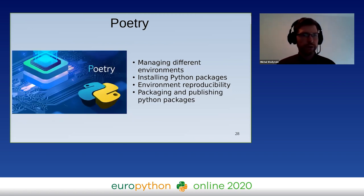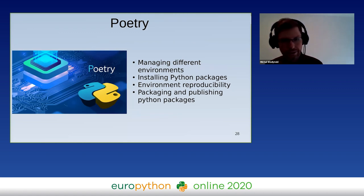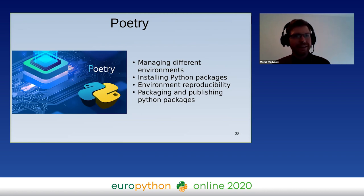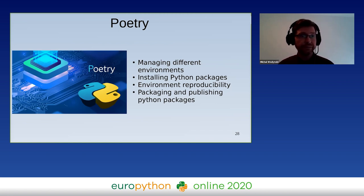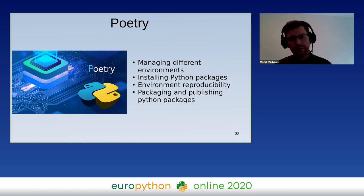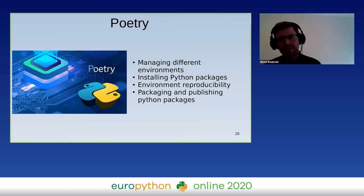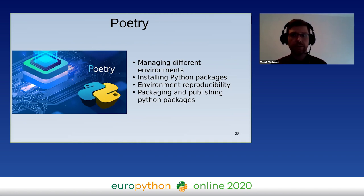An alternative to pipenv is Poetry, which is also great. Poetry has the same features as pipenv but is faster at resolving dependencies. It manages different environments, installs packages, resolves dependencies, and also provides a convenient way of creating packages and publishing them to PyPI, making it more useful for library authors.